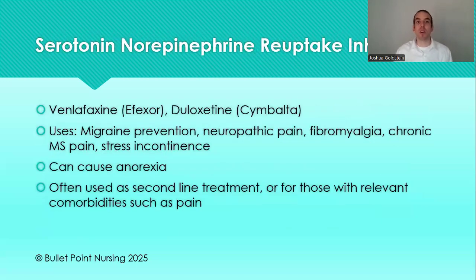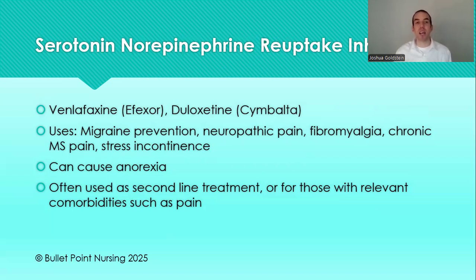Next we have SNRIs — serotonin-norepinephrine reuptake inhibitors. The two classic drugs are venlafaxine and duloxetine. These are not first-line drugs; everything from this point forward would be a second-line or further option. The mechanism of action is exactly like it sounds — it blocks the body from getting rid of both serotonin and norepinephrine, though venlafaxine and duloxetine have more effect on elevating serotonin than norepinephrine.